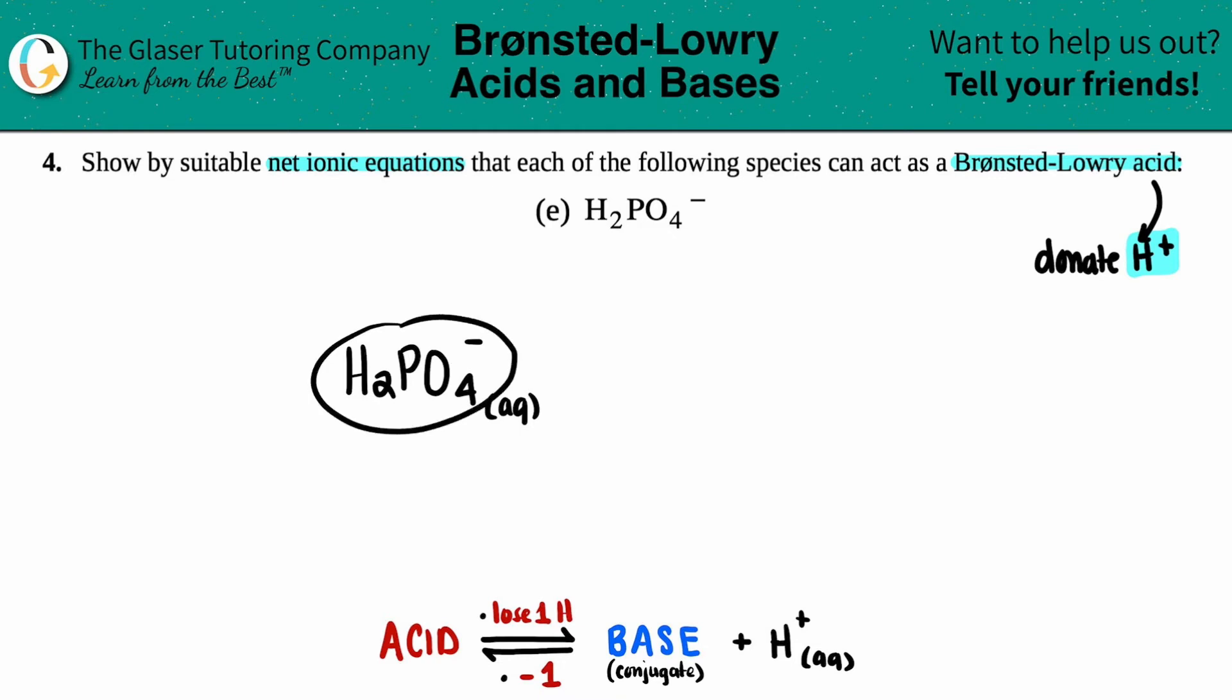Now, since H2PO4 minus is not on our list of six strong acids, which I highly recommend that you guys memorize, it's going to be in equilibrium. So we write the double arrow.